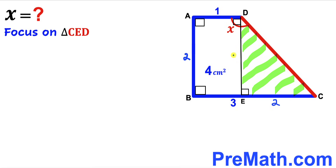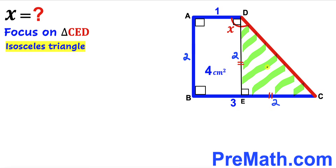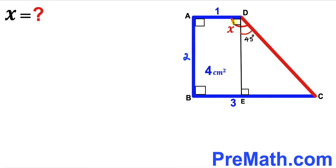Furthermore, perpendicular DE equals side AB, which is two centimeters, so DE is two centimeters as well. We observe that side DE is two centimeters and side CE is two centimeters — therefore right triangle CED is an isosceles triangle. Since the two legs are equal and the right angle is 90 degrees, the two remaining angles are each 45 degrees.